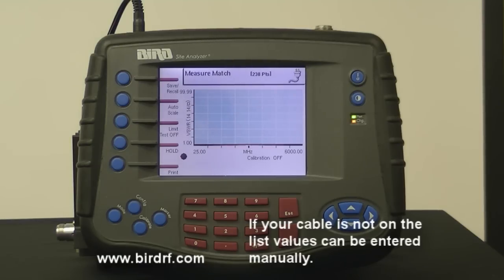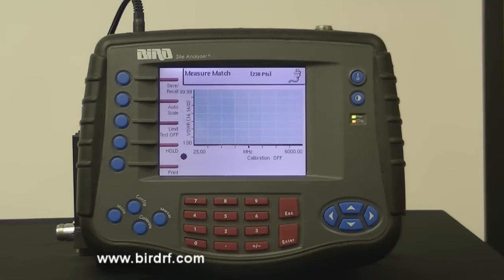If your cable is not in the list, the values can be entered manually. The cable list entry then becomes custom when manually entering a value for velocity of propagation and/or cable loss.